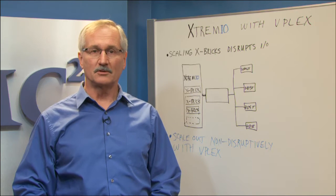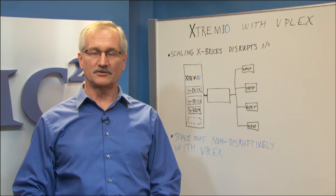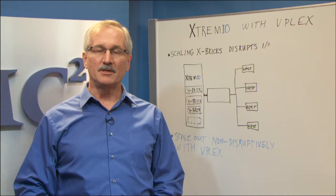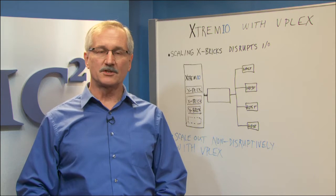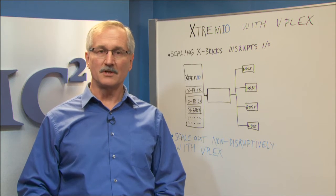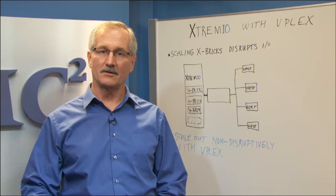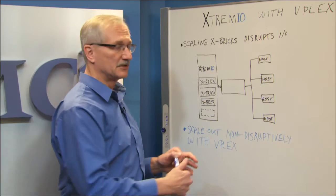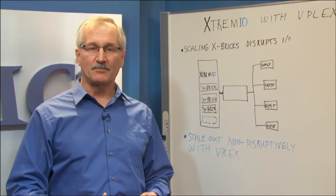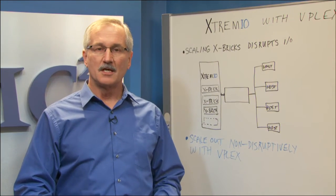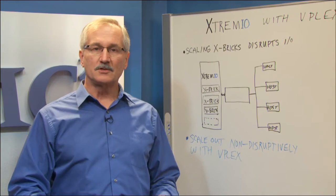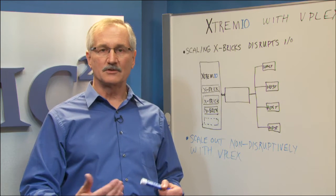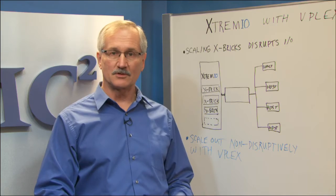It comes in the form of something called XBrick, which is a small little box with a certain amount of storage in it. People tend to buy just enough flash storage like XtremIO for their needs and then over time scale it out. So one of the issues we have when we scale and add extra XBricks is disruption to application access while you're doing that. So traditionally if you wanted to add other XBricks in and expose that to the host, you'd have to disrupt application access to the storage to do that.